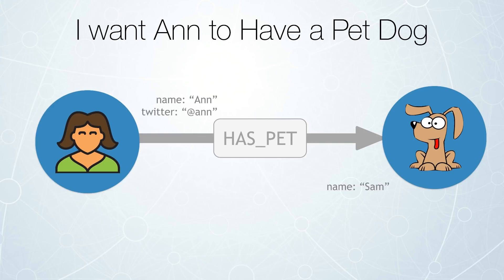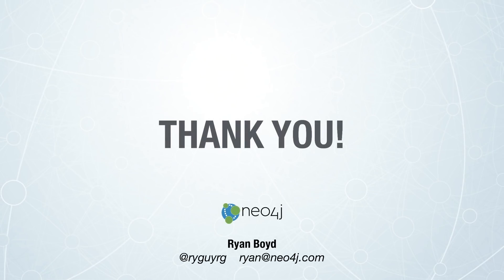So we have created our graph — it has Anne in it, has Sam in it, with Anne having that pet Sam. That's a basic introduction to Cypher and some of the create operations, a little bit of querying and modifying. We will teach you, through the next video or through our documentation and tutorials in the Neo4j sandbox, how to do many more complicated queries. You can also learn through our Neo4j online training at neo4j.com/graphacademy, or through classroom training accessible there as well. Thank you very much, and I hope you have a fantastic day. Feel free to reach out if you have any questions.